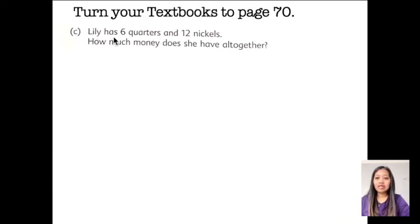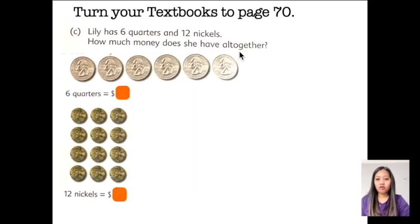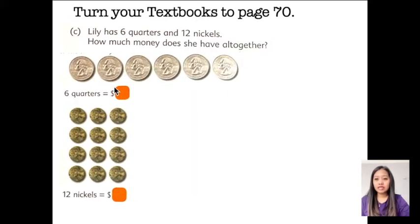Now, Lily has six quarters and 12 nickels. How much money does she have all together? So, for visualization, here we are. We have six quarters here. We already knew that that is how much? Yes, 1 dollar and 50 cents. And 12 nickels is equivalent to... How much is one nickel? One nickel is 5 cents. Therefore, 12 nickels is equivalent to... I'll give you 5 seconds.